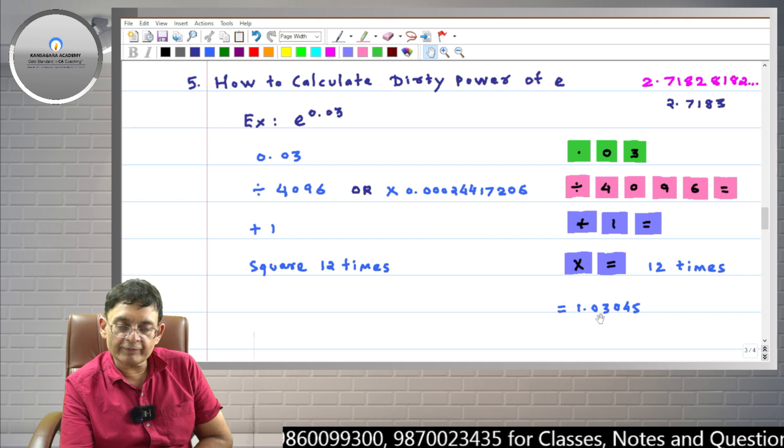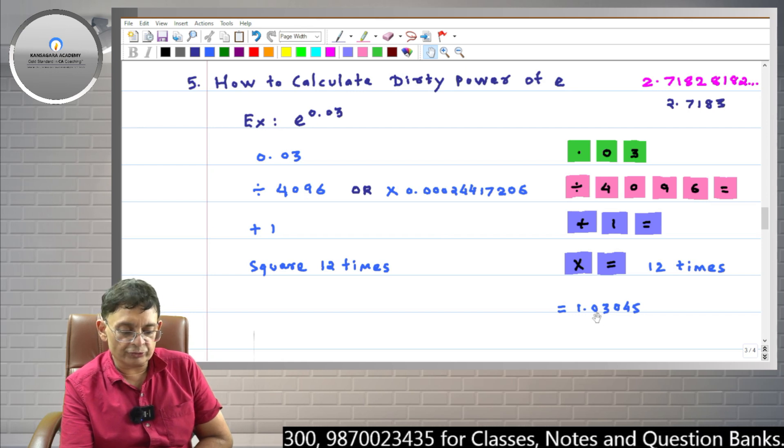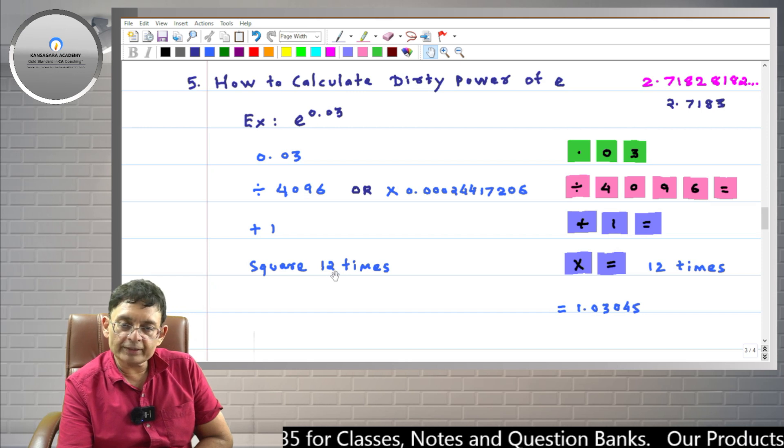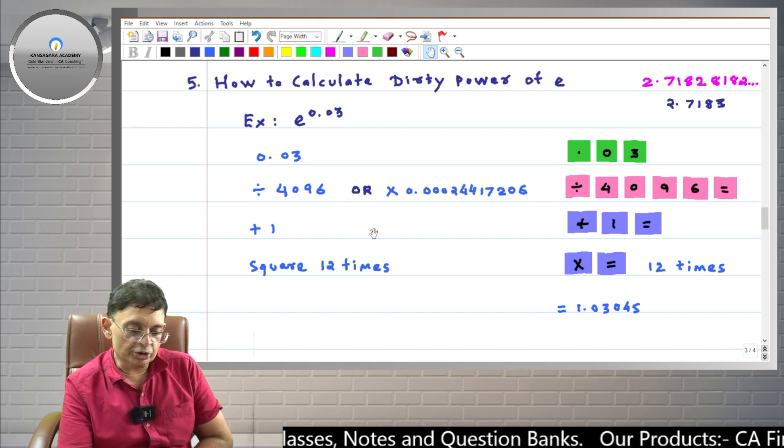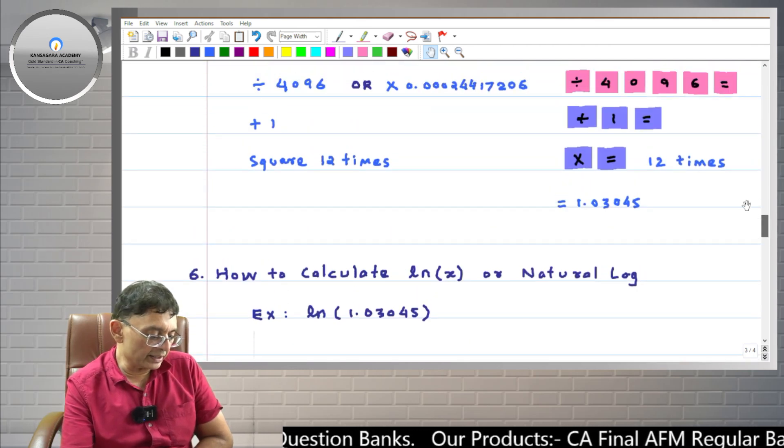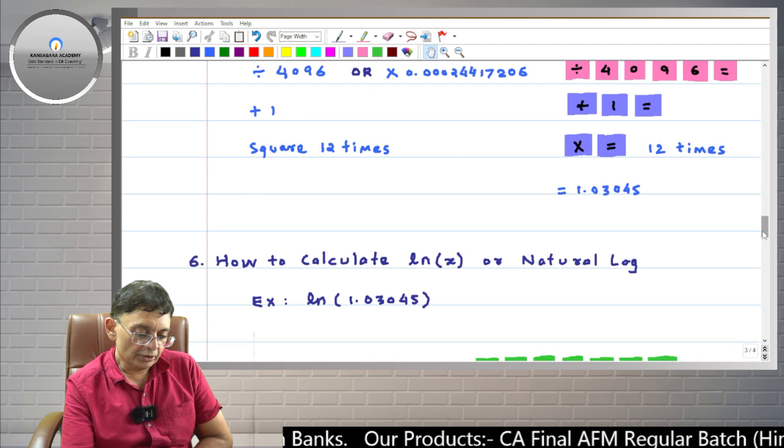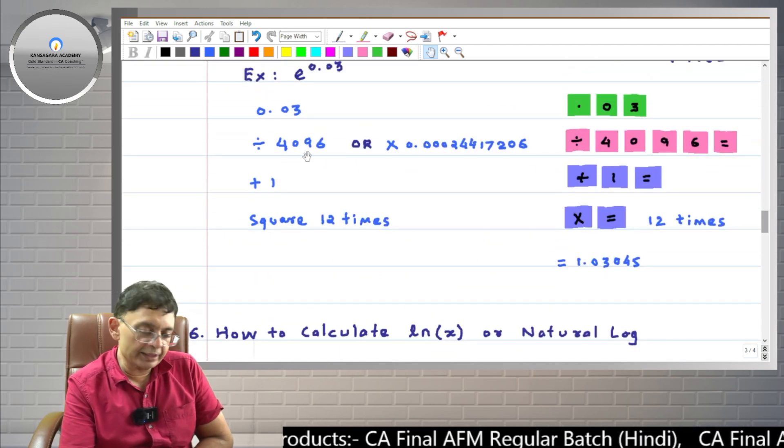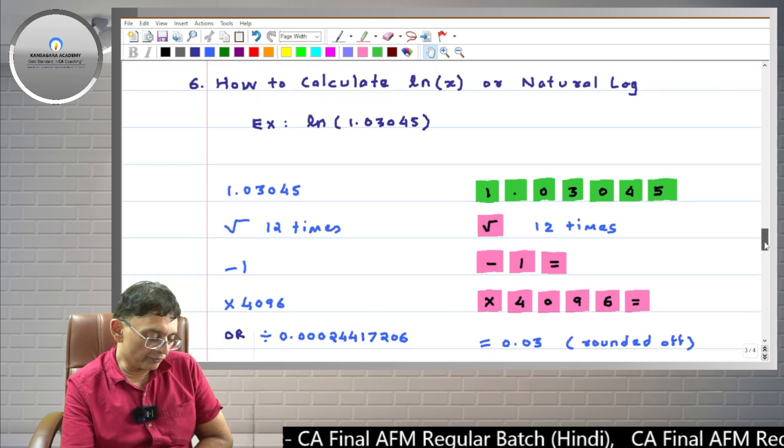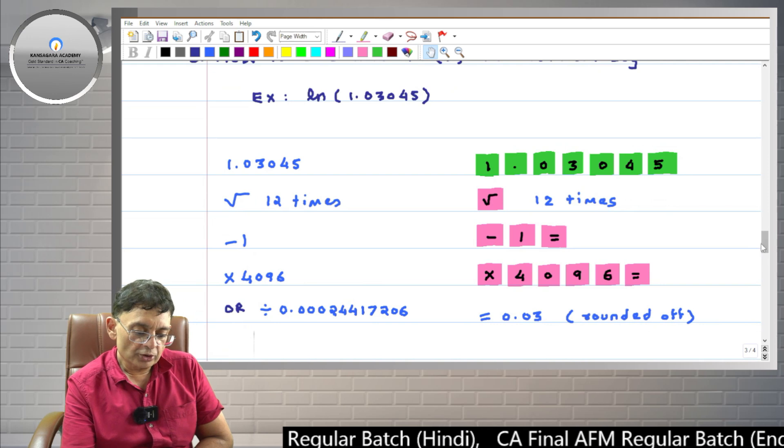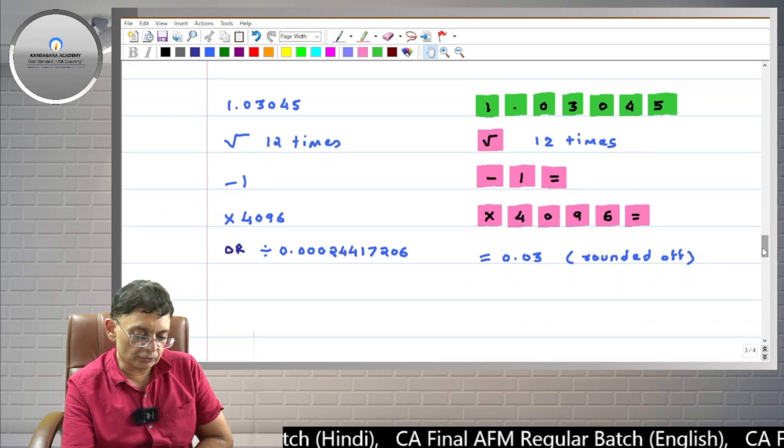So friends, here, we will do the process just reverse. You enter 1.03045. Then here, we took square. So now we will take root 12 times. So that is that. We took root 12 times. Then here, friends, we had added 1 plus 1. So here, we do it minus 1. Then friends, here we divided it by 4096. So here, friends, we will multiply by 4096. So it is just the reverse process. So here, briefly, I have told you the logic of this process also.